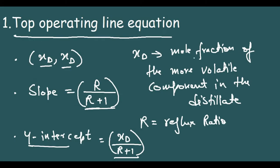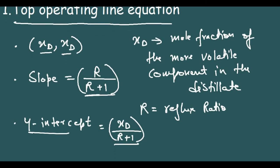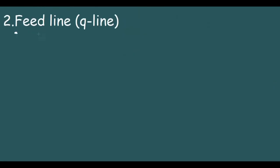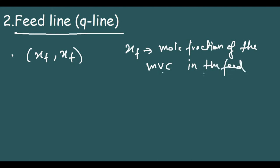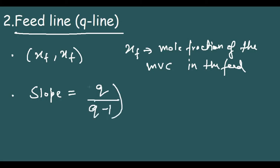Now we will study the feed line equation. This feed line is also known as the Q line. The first property is it passes through the point (XF, XF), where XF is the mole fraction of the more volatile component in the feed. The second property is the slope of this feed line is equal to Q by Q minus 1.